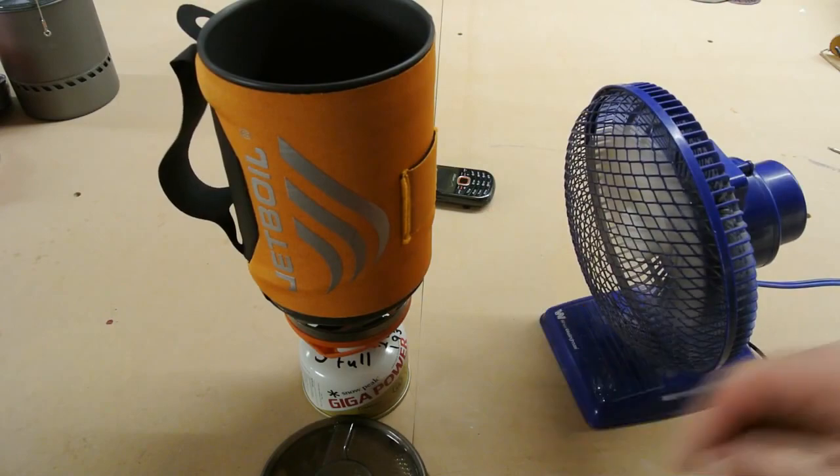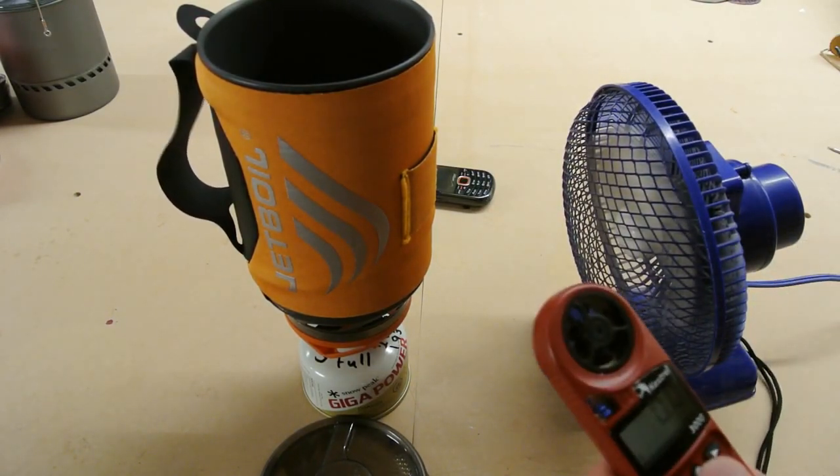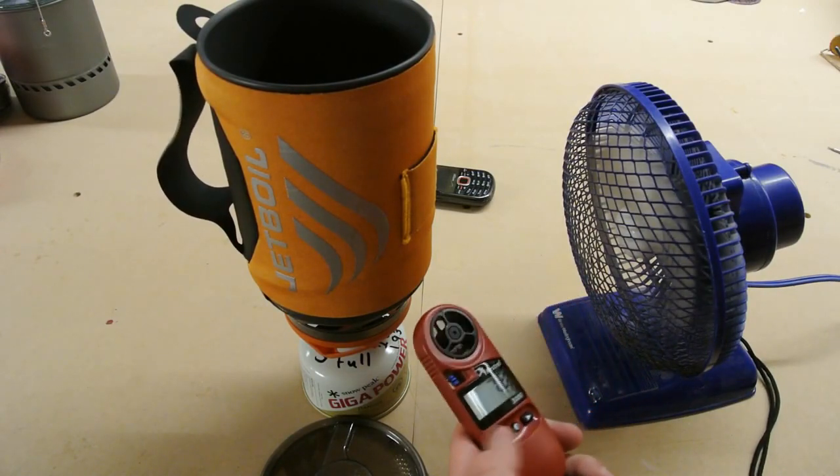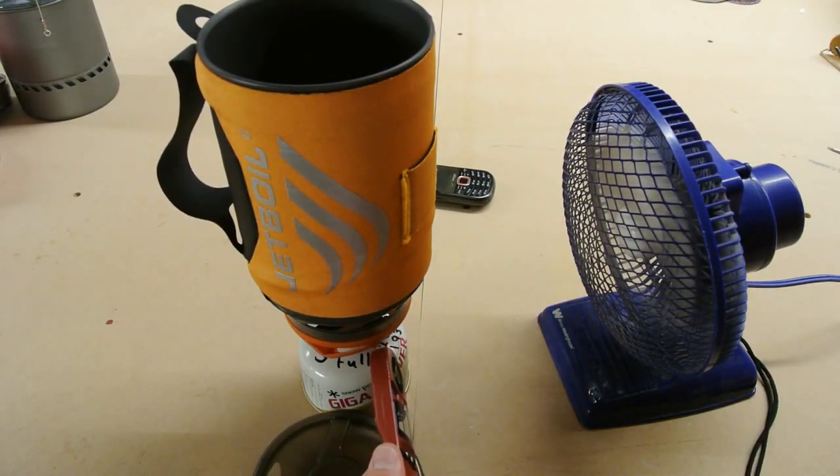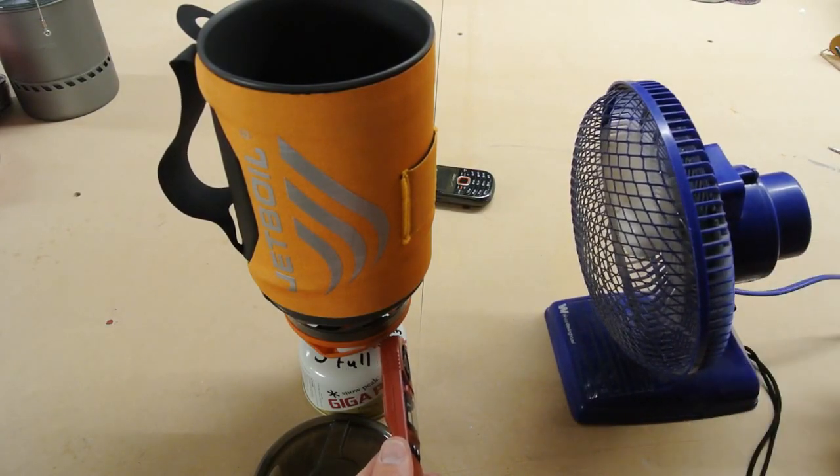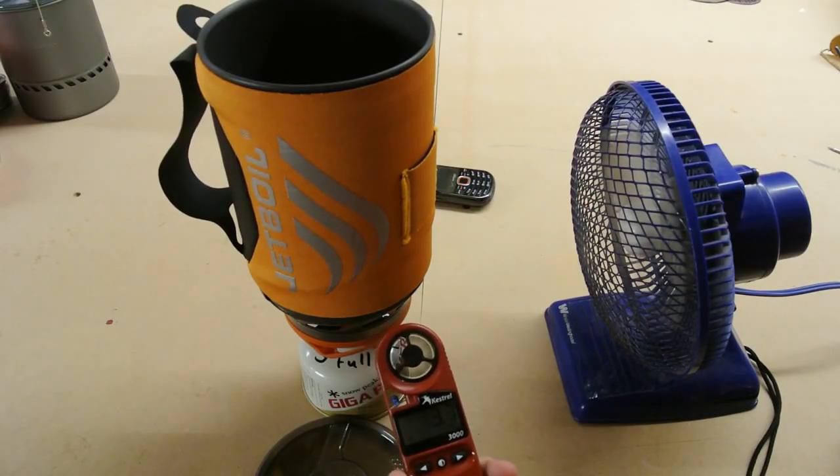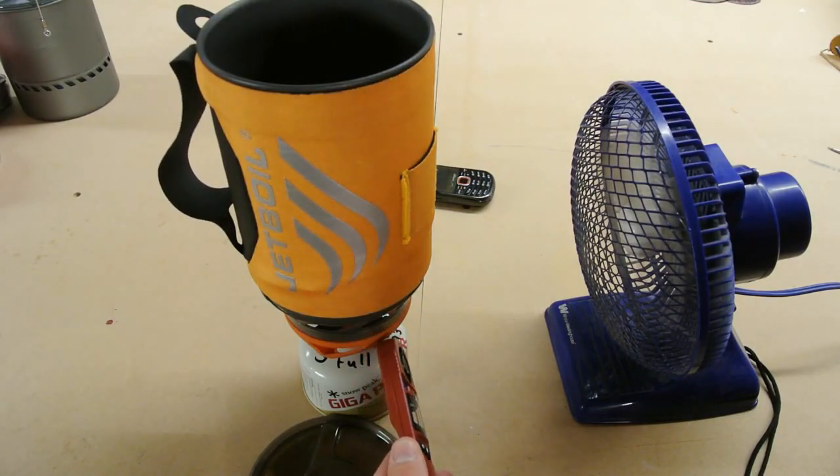And so directly at the canister right there, we are looking at 4.2 to 3.7. It's just kind of bouncing back and forth between those two.